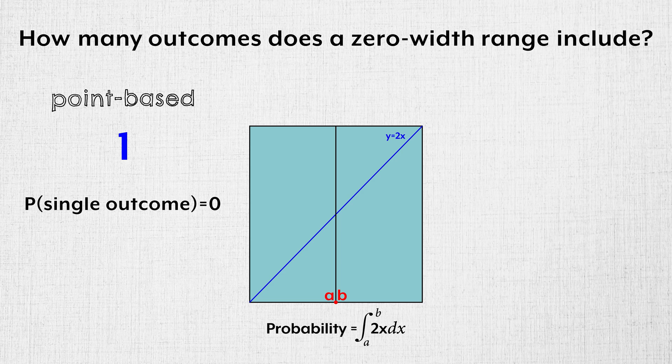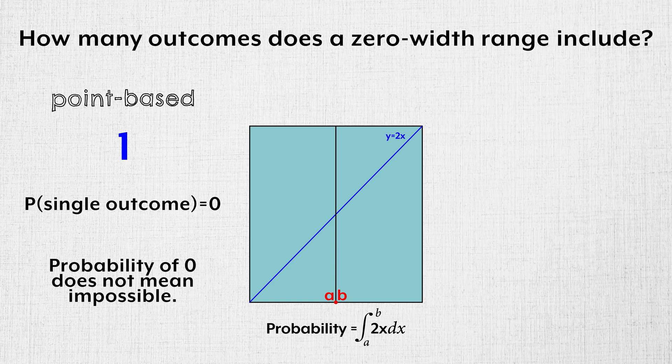In fact, the probability of any single outcome occurring is zero. But since single outcomes can have non-zero probability densities, they are possible. A probability of zero does not mean impossible.